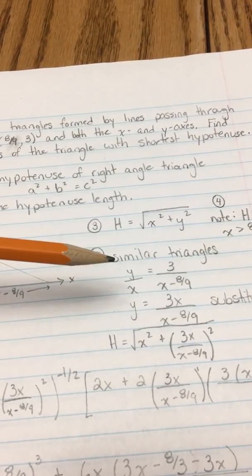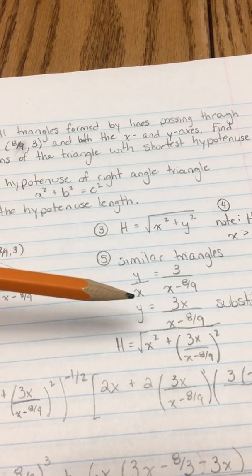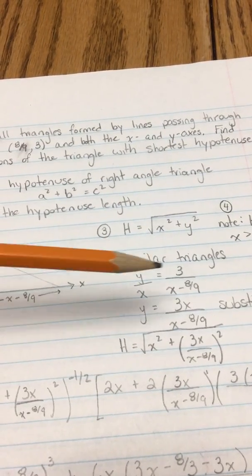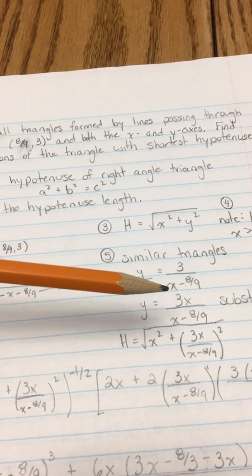To make an equation with similar triangles we have y/x, which is the large triangle, equals 3/(x - 8/9).